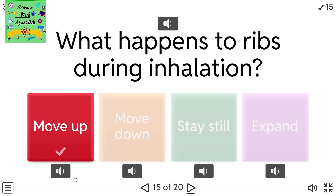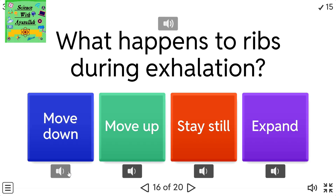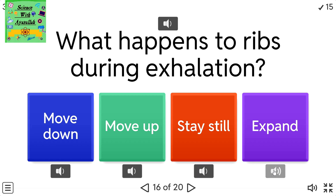What happens to ribs during exhalation? A) Move down. B) Move up. C) Stay still. D) Expand.